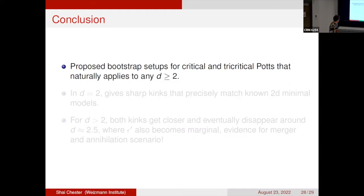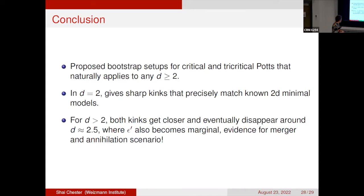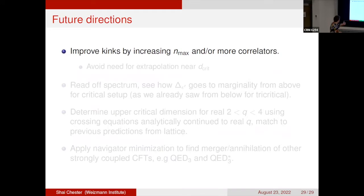In conclusion: a bootstrap setup for the critical and tricritical Potts is proposed that naturally applies to any d ≥ 2. Unlike previous studies using ad hoc fractional lattices, this method provides a natural connection from d=2 to d>2. In d equals 2, sharp kinks in the bootstrap plots precisely match the known 2D minimal model critical exponents to three digits. As d is increased above 2, both kinks get closer and closer until they appear to disappear near d equals 2.5, where ε' becomes marginal — providing evidence for the merger and annihilation scenario.